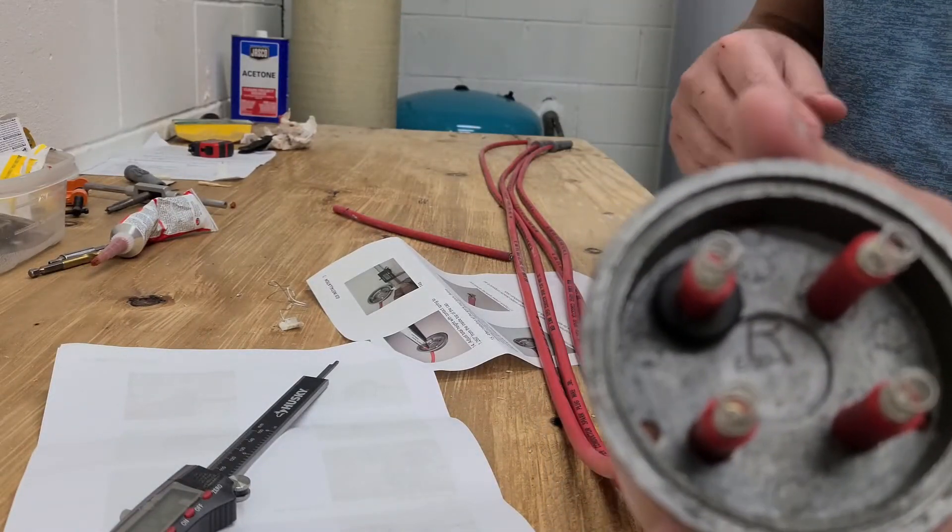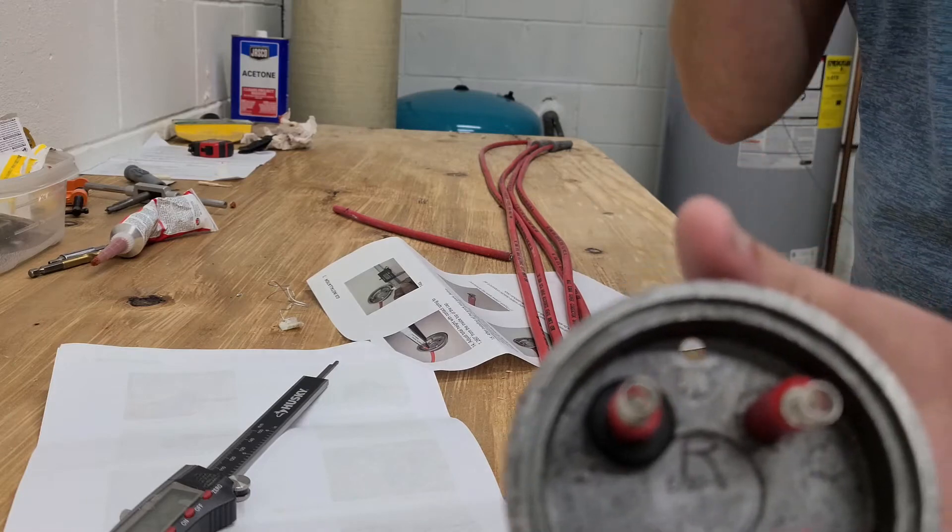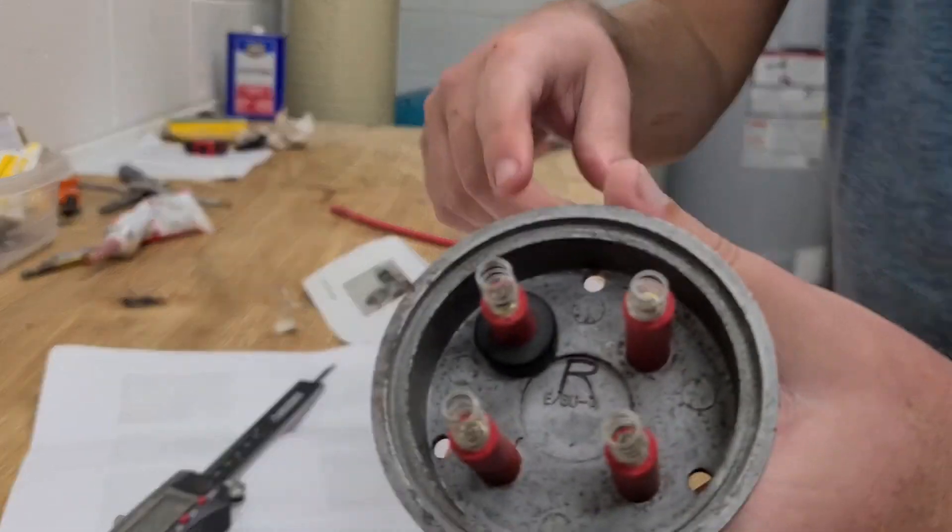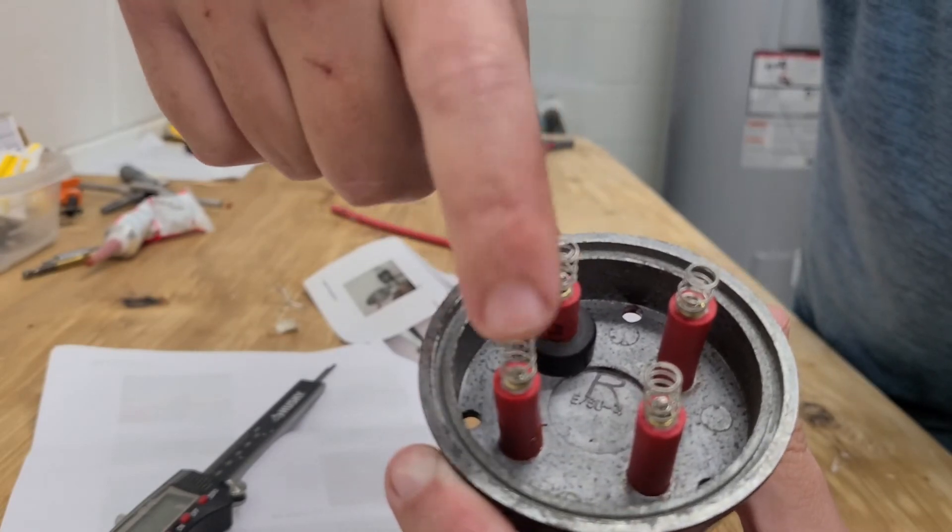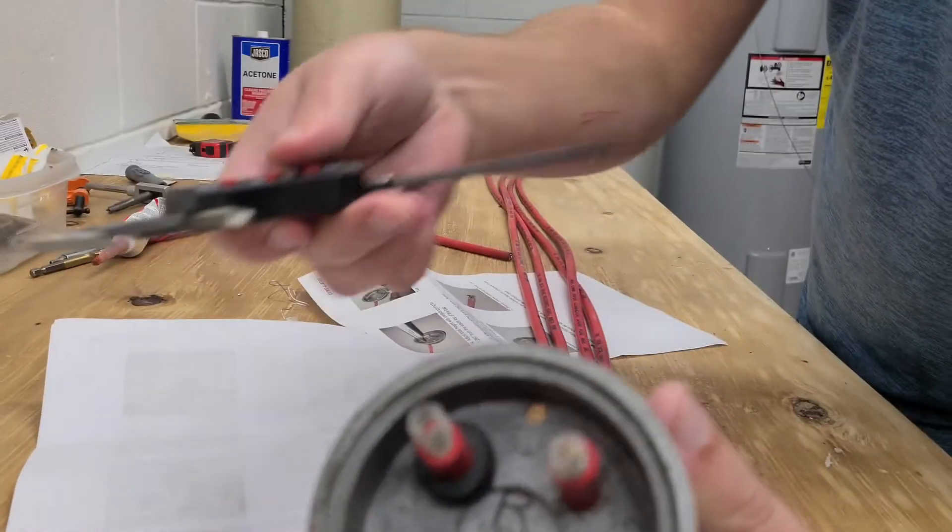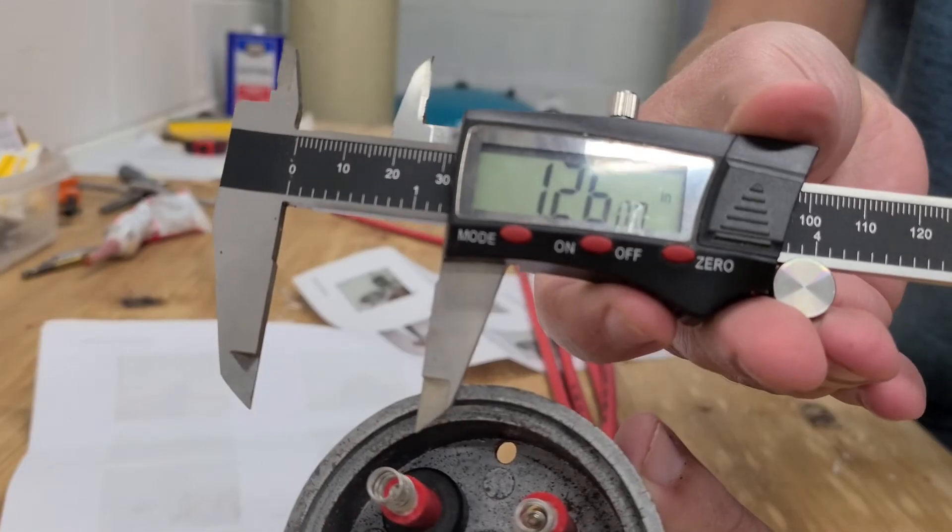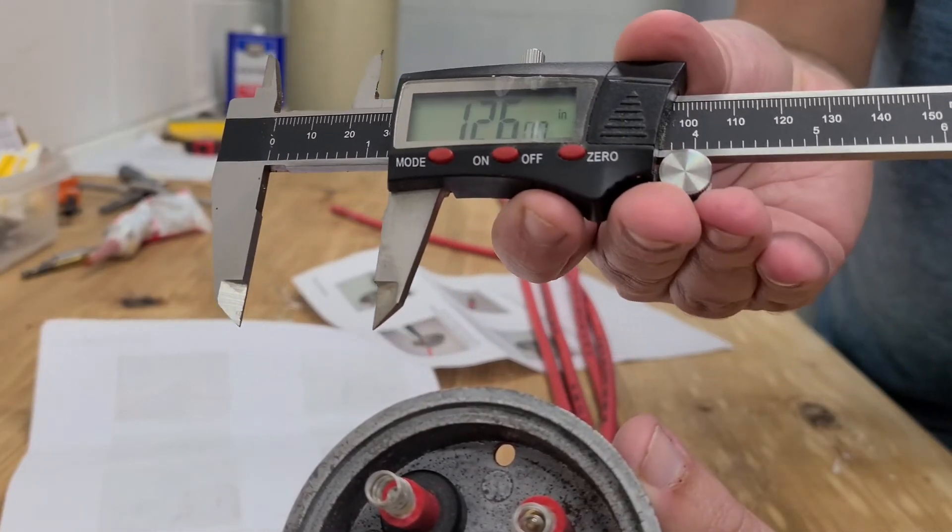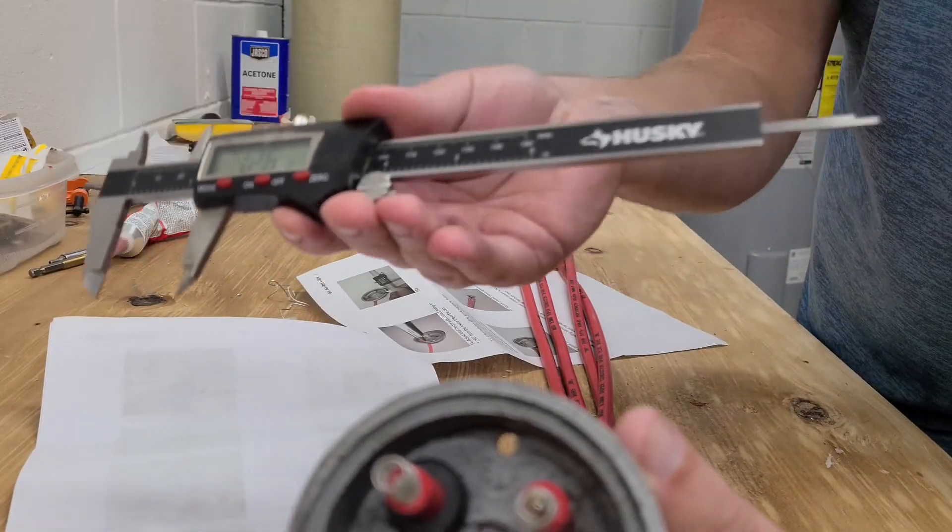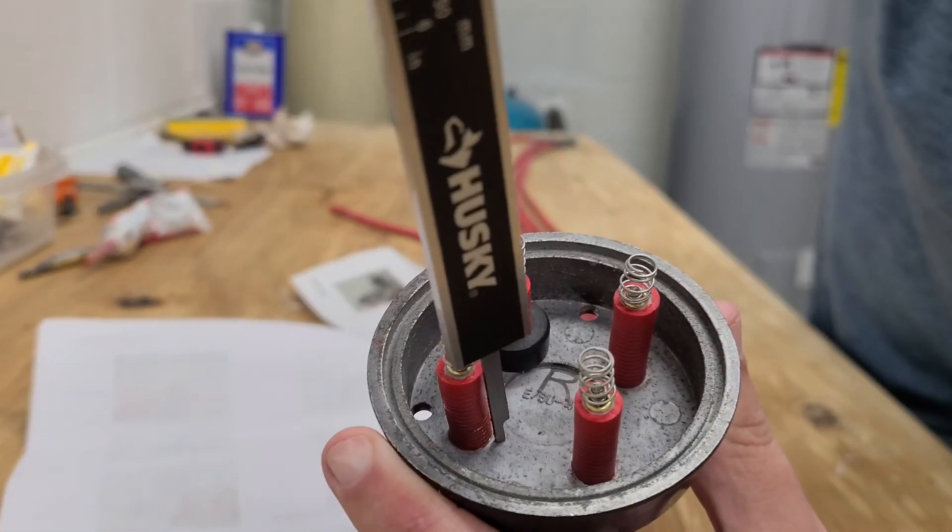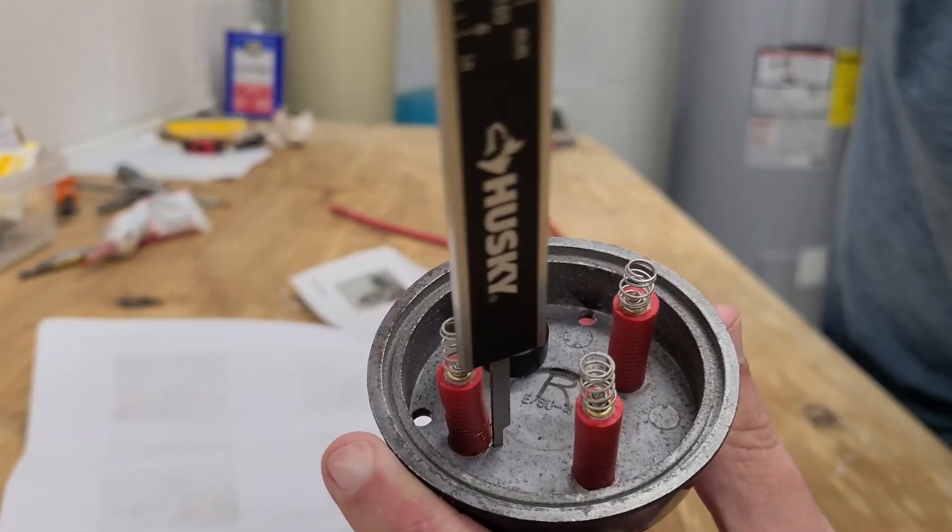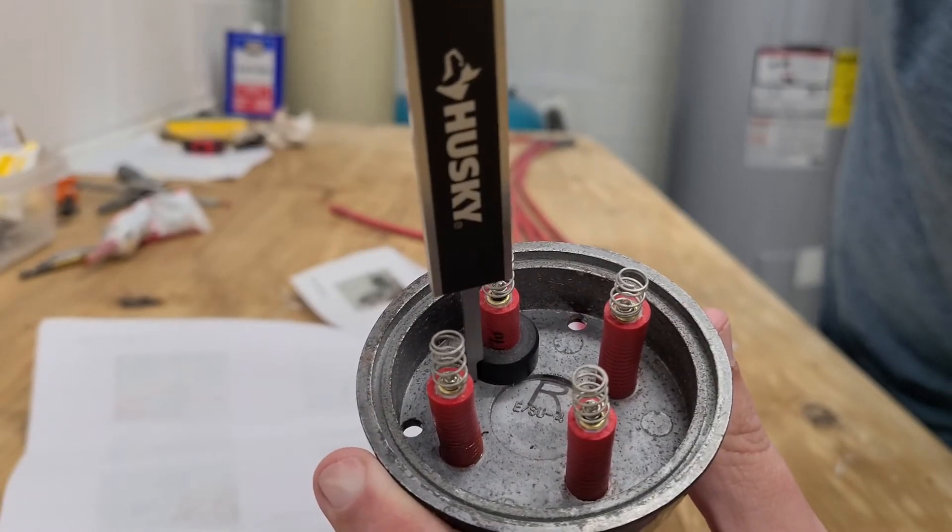From the inside of the cap to the top of the spring needs to be 1.26 inches. So what's that, a little over an inch and a quarter. You can see this one is too high. I already adjusted this one.